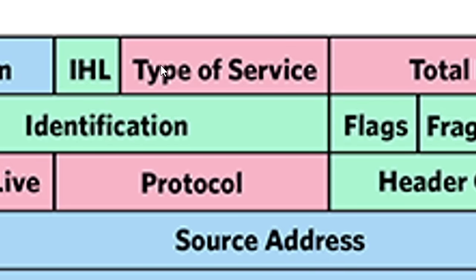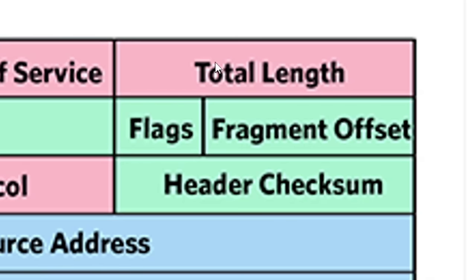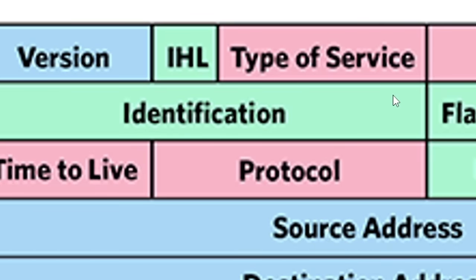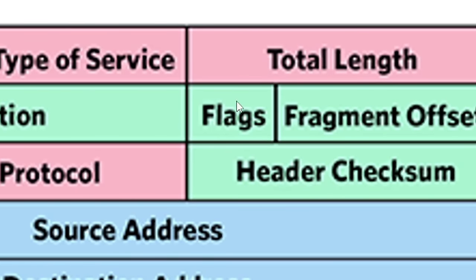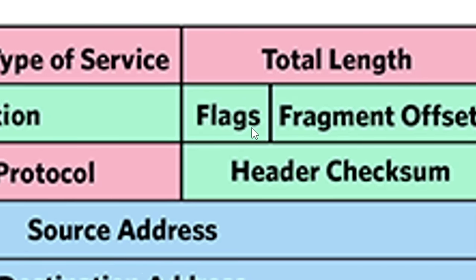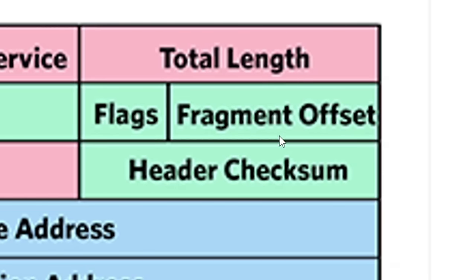Moving on to the second row: Type of Service, or TOS, describes the packet's service type — like whether it's focused on speed, reliability, or cost-effectiveness. Total Length tells us the overall size of the packet, including its data. In the third row, Identification gives each packet a unique ID, helpful for putting together fragmented packets. IP Flags indicate if the packet is split into smaller parts, which can be used for bypassing security measures. Fragment Offset tells us where a split packet starts in the sequence.